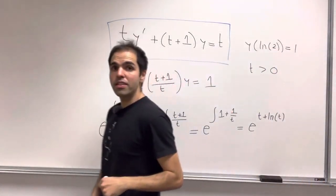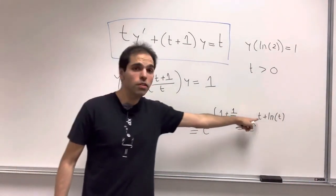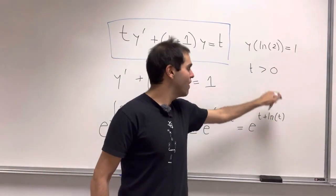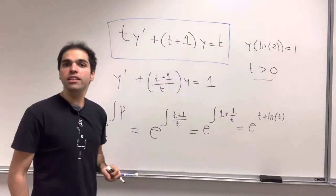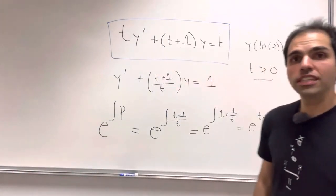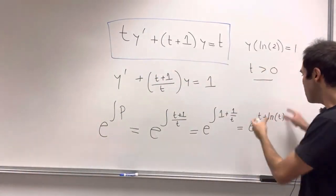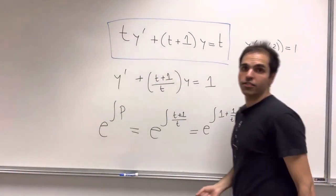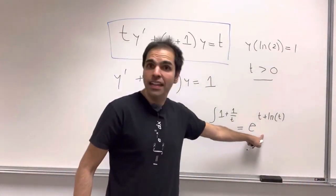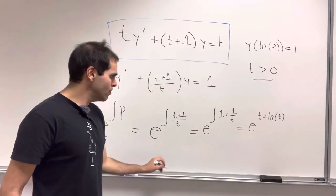Which we can simplify this, which we'll do in a second. But two remarks are in order. Remember, first of all, no absolute value, because we're assuming t is positive. Also, you do not need to add plus C, because we just want one integrating factor.